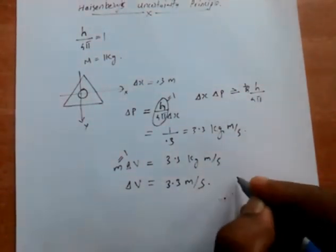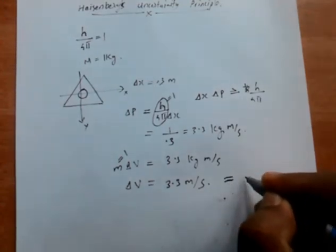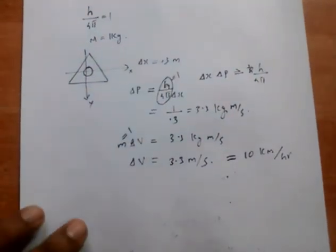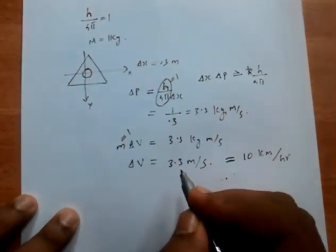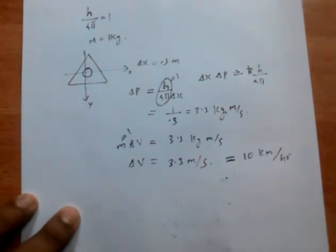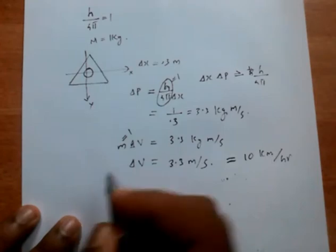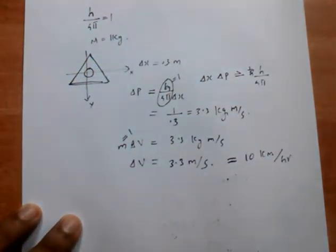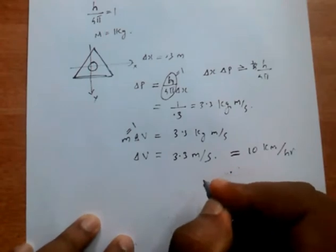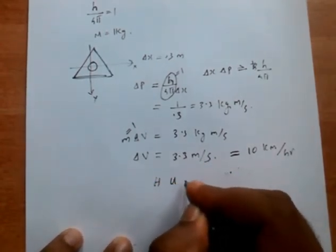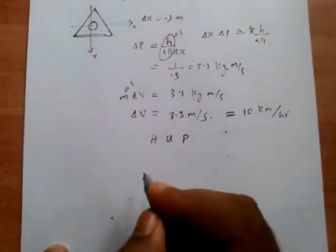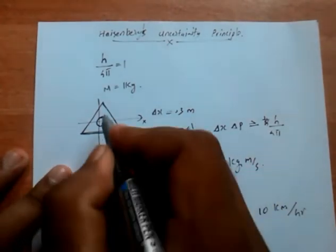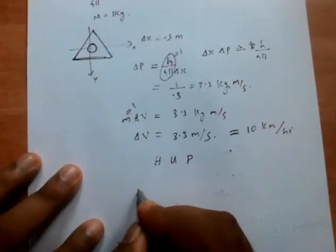This 3.3 meter per second is roughly 10 kilometer per hour. That means the billiard ball must adopt a speed uncertainty on the order of 3.3 meter per second, that is 10 kilometer per hour. So the moment the professor places the wooden triangle over the billiard ball, the billiard ball starts to move wildly in all directions. This is the result of Heisenberg's uncertainty principle. Because the billiard ball is now constrained in its position, the price you pay is large momentum — large delta p.